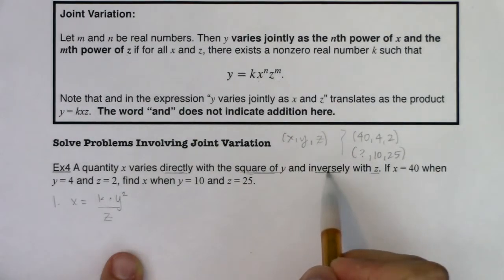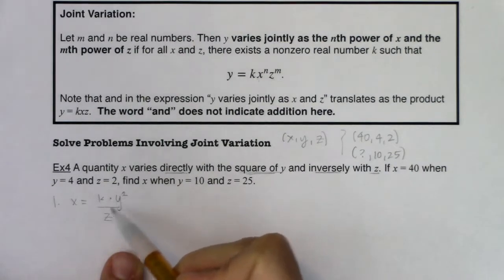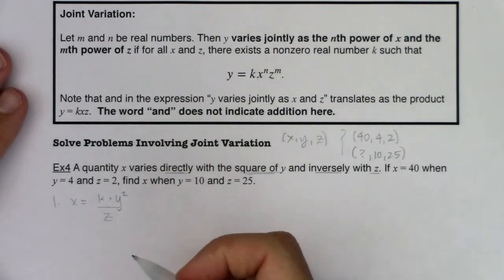Whenever you see inverse variation, it implies division. And this says square of Y, so I will make sure to square Y. And I will be mindful of squaring Y throughout the rest of this problem.